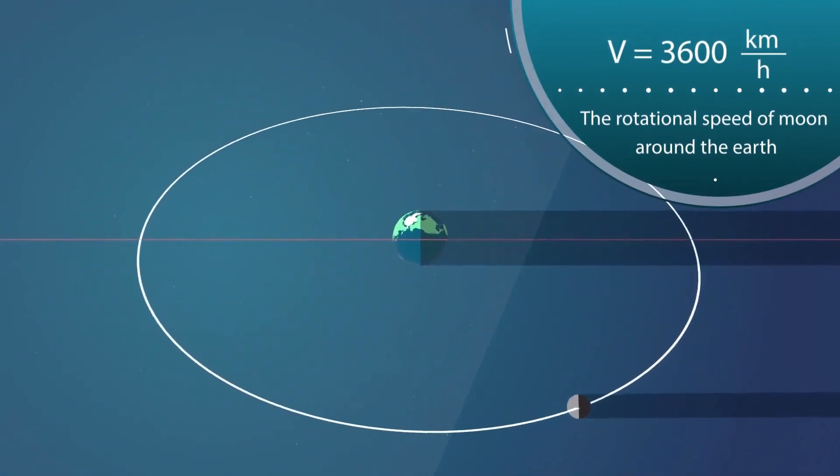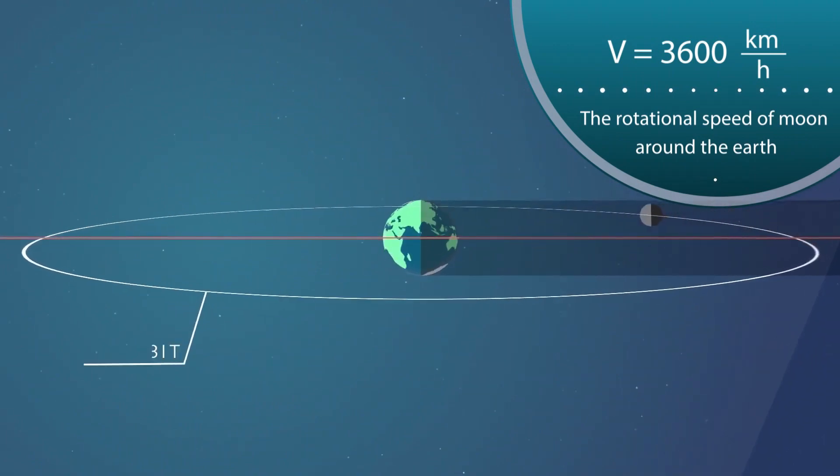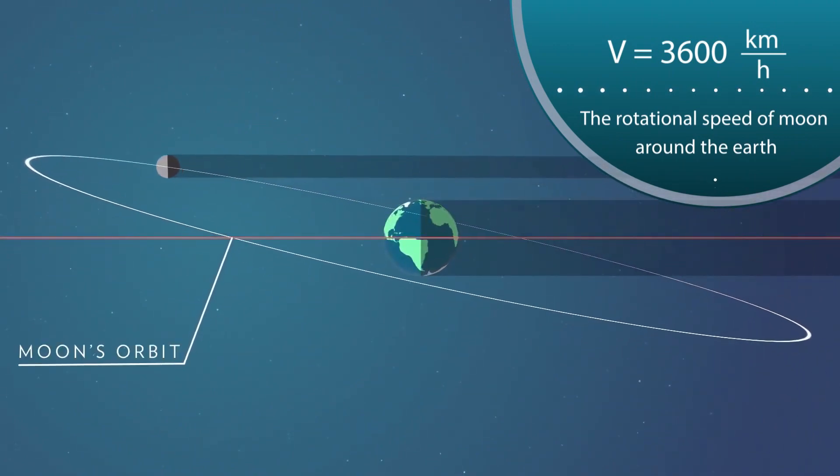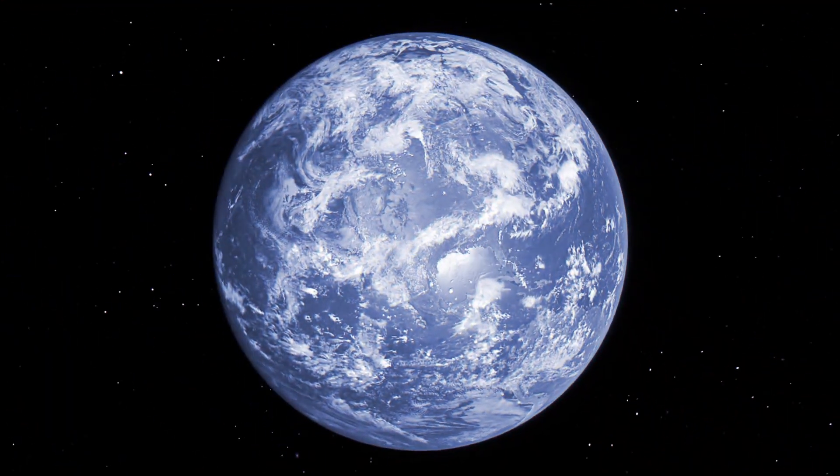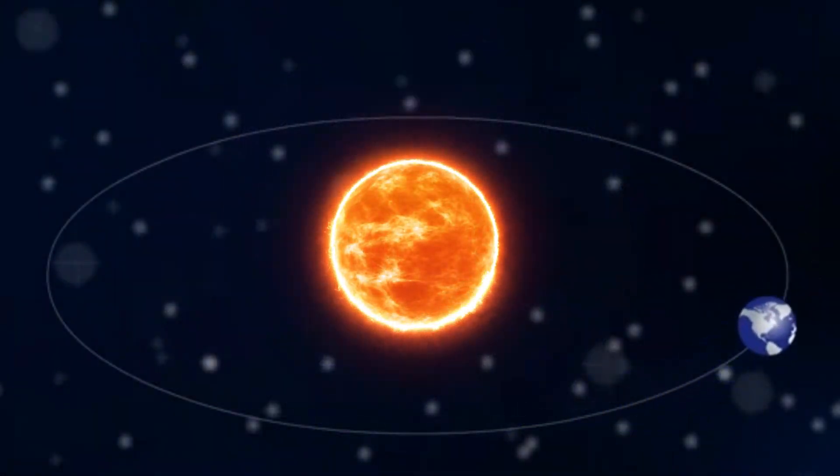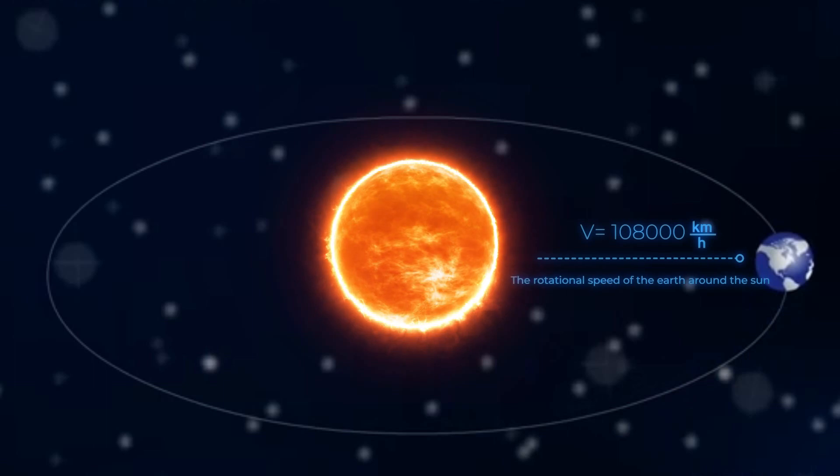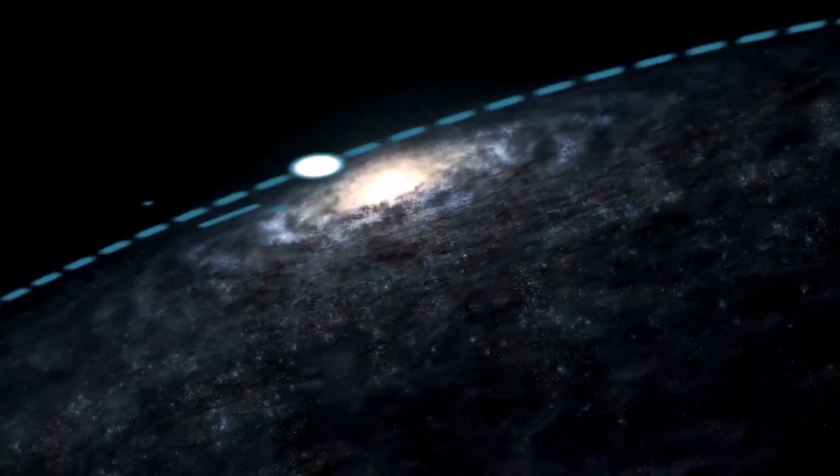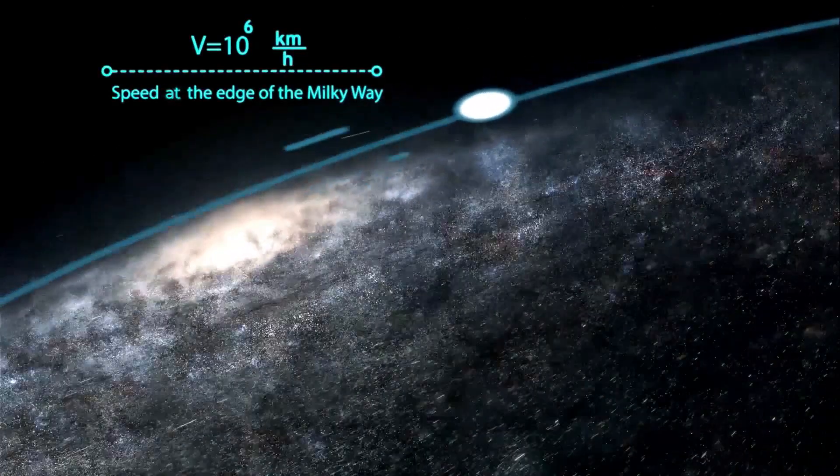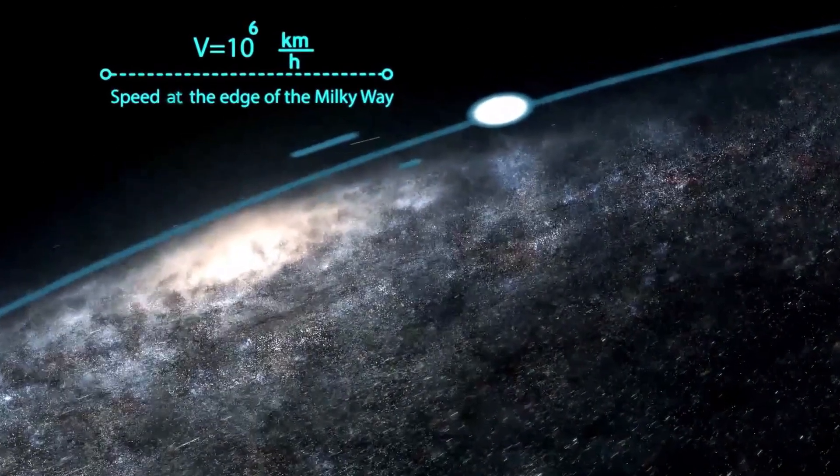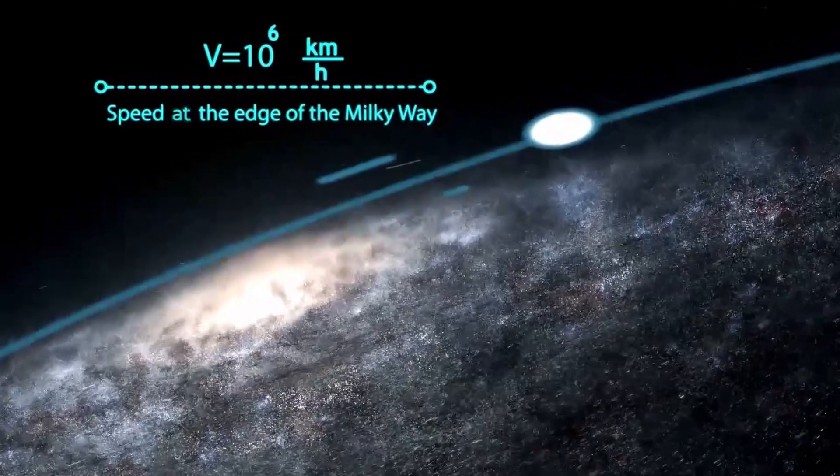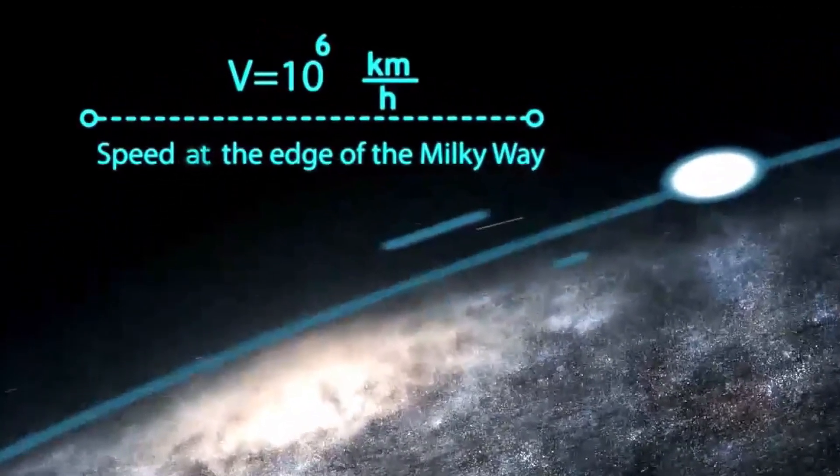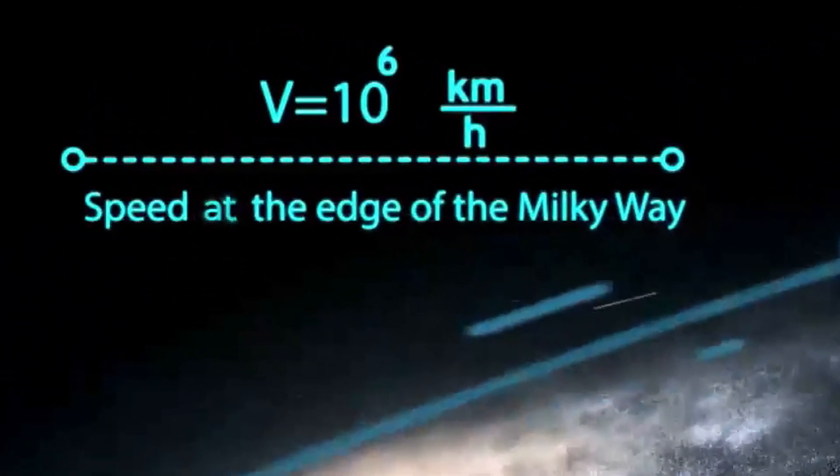We know that the speed of the Moon around the Earth is 3600 km per hour and that the Earth's speed around the Sun is 108,000 km per hour. As far as the celestial objects which are at the edges of the Milky Way at 10 to 17 km from its center, it reaches a speed of 10 to the power of 6 km per hour.